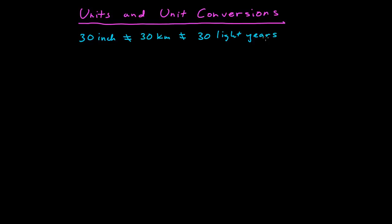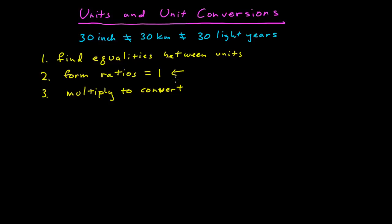As far as unit conversion is concerned, there's a straightforward procedure to follow. That procedure involves: first, find equalities between units. Then, using those equalities, form ratios that equal 1. And then finally, multiply to convert. Converting units is really just multiplying your system by a judicious choice of the number 1. You might be surprised exactly how many problems you can solve using that technique.